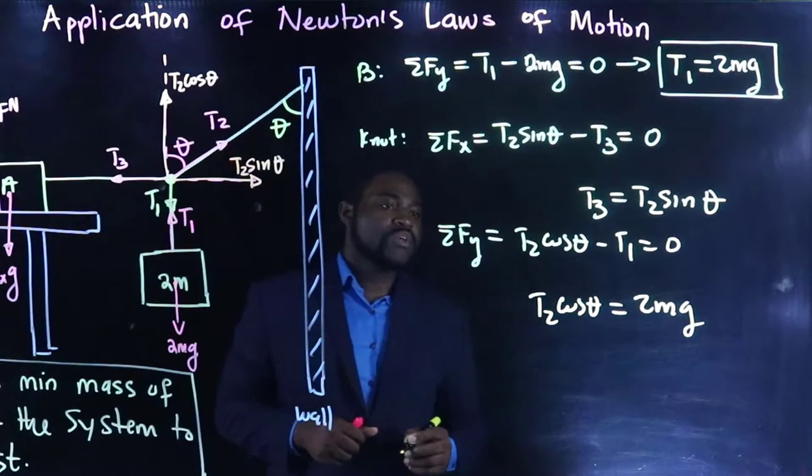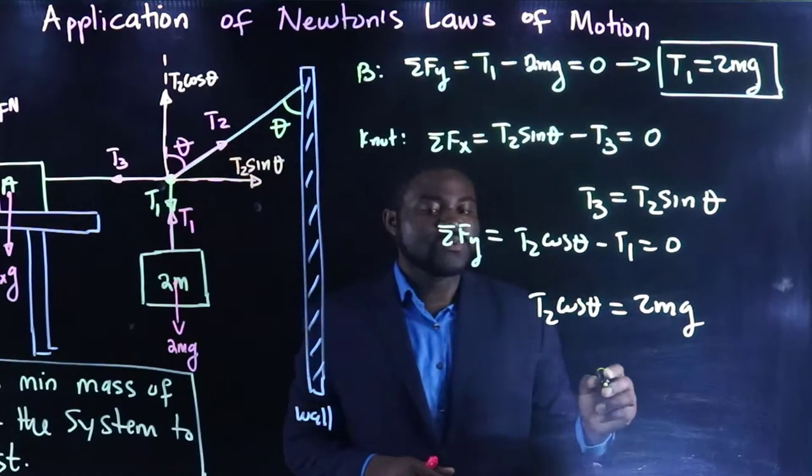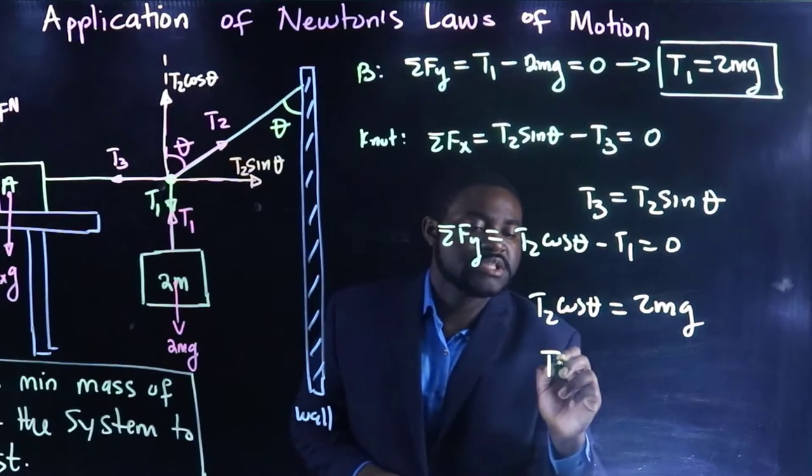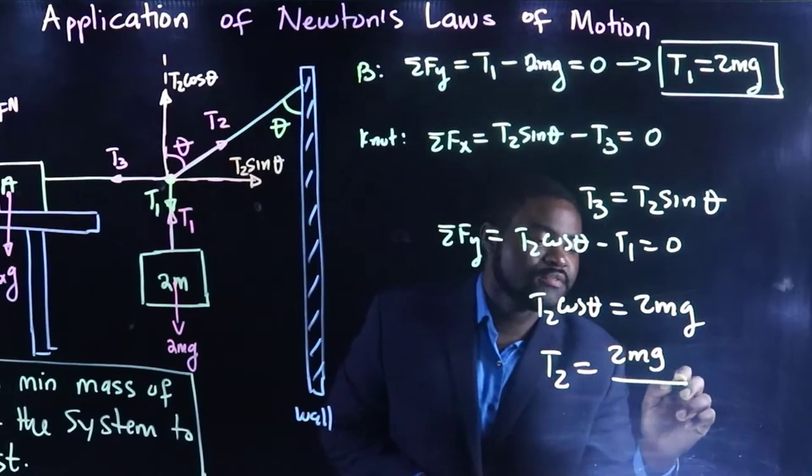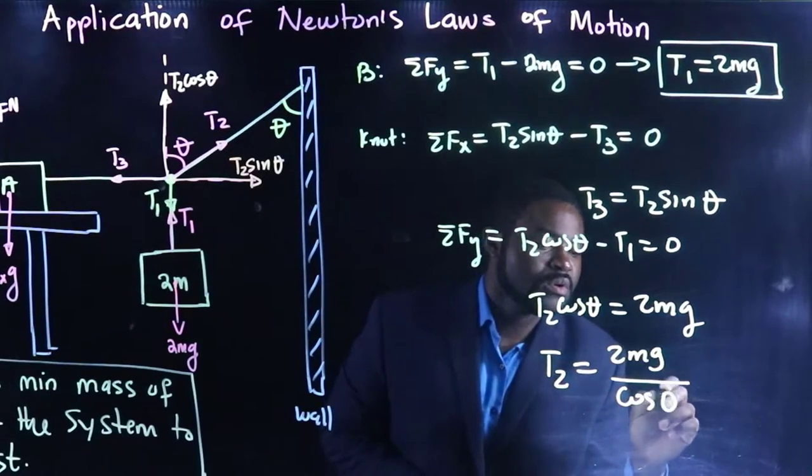Now, if you compare, in other words, T2 is equal to 2MG divided by cosine theta.